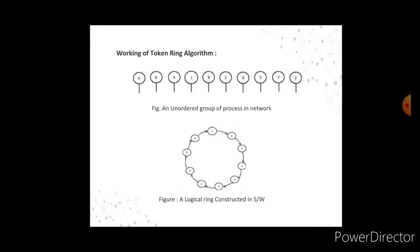If a process is handed the token by its neighbor and is not interested in entering a critical region, it just passes it along. When no process wants to enter any critical region, the token just circulates at high speed around the ring. Only one process has the token at any instant, so only one process can be in the critical region at a time. This is the working of the token ring algorithm.